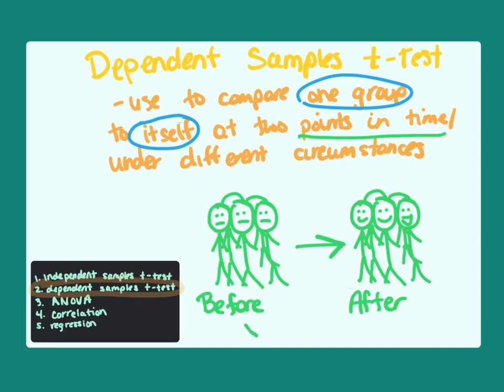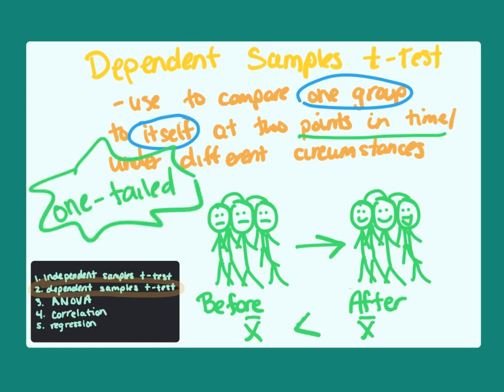In this case, I'm expecting the mean satisfaction to be lower before getting a raise compared to after. Because I'm indicating the direction of change — that there will be more happiness later — this would require a one-tailed test. However, if I had simply hypothesized that happiness would be different before versus after getting the raise, then I would be using a two-tailed test because I have a non-directional hypothesis.